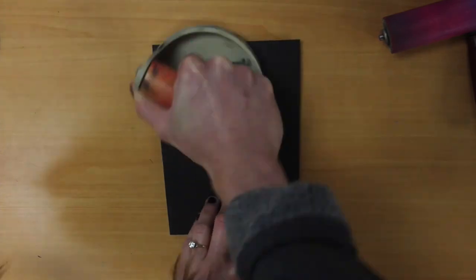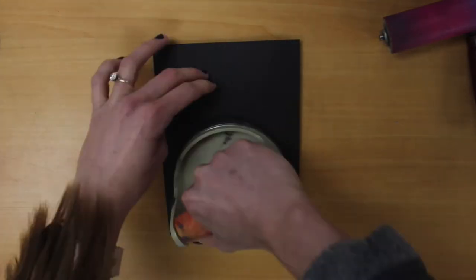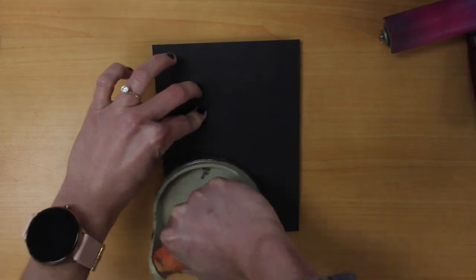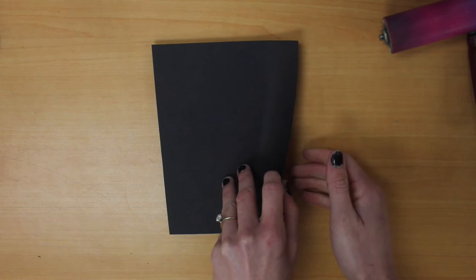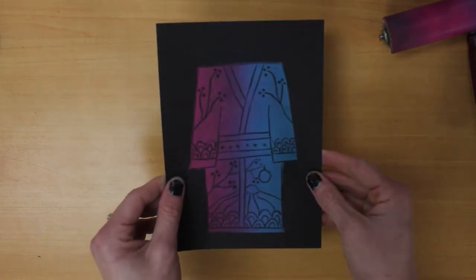Again, repeat the process. We want to take our barren. We want to hold down onto our block as we are going around with our barren on our paper to transfer that ink from the block to our paper. Oh, these look so beautiful.